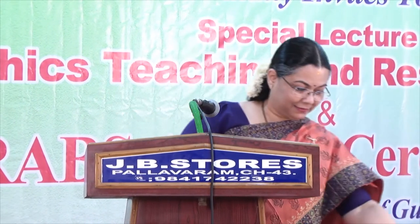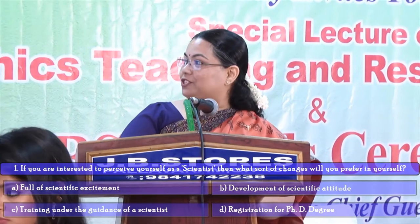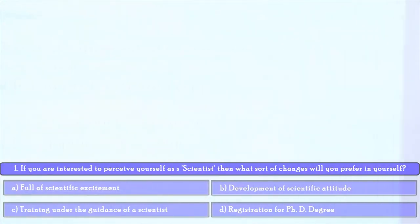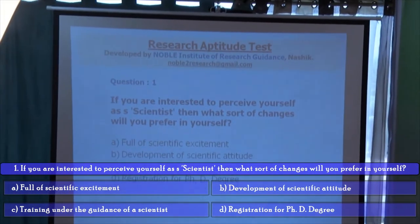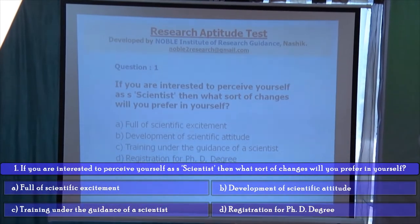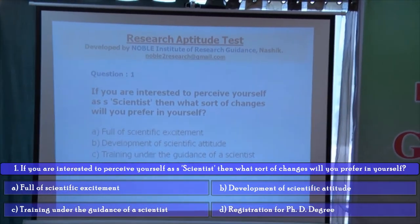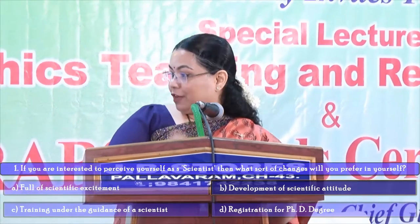These are my references. And now I am going to keep you awake — I have some incentives, which are chocolates! I am going to conduct a small research test, very interesting and very simple. I need answers from the audience and the first correct answer will get a chocolate. The first question: if you are interested to perceive yourself as a scientist, then what sort of changes will you prefer in yourself? The options are: full of scientific excitement, development of scientific attitude, training under the guidance of a scientist, and registration for a PhD degree. The right answer: development of scientific attitude.